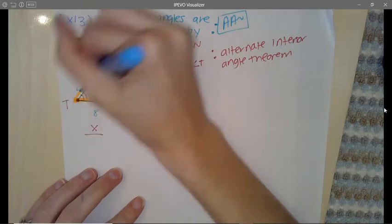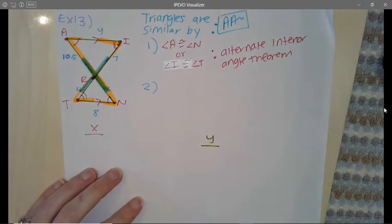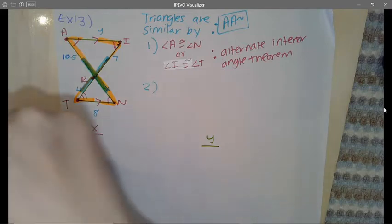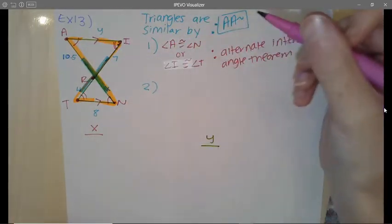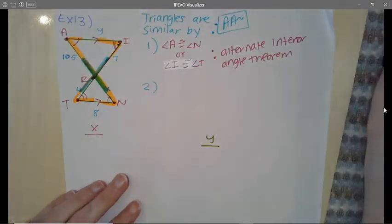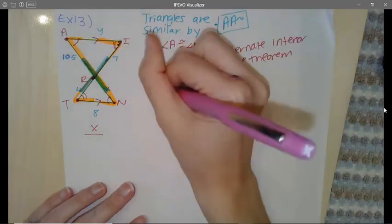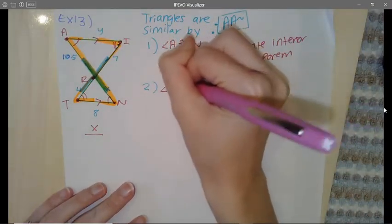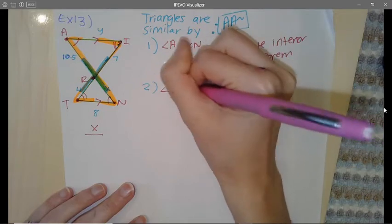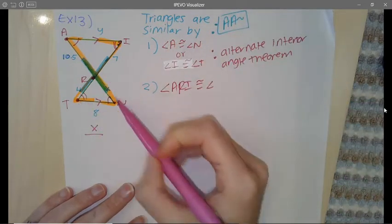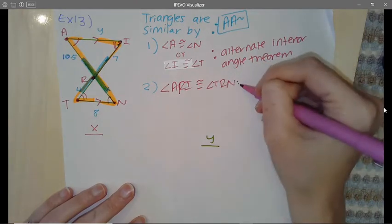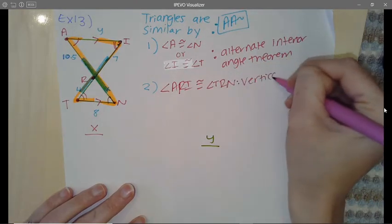Which angles form at the X? That's correct—vertical angles form at the X. So I could have also said angle ARI is congruent to angle TRN, and that is because of the vertical angle theorem.